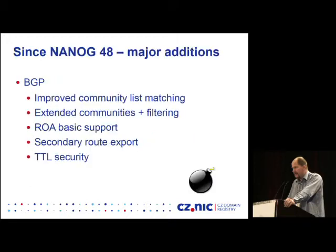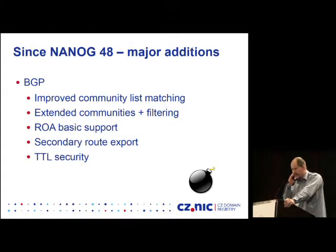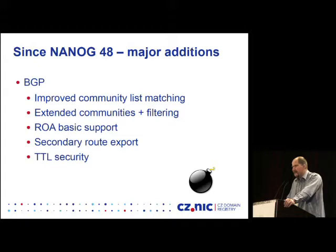Now I will focus on things added since NANOG 48 — just the major additions. A big area we are concentrating on is BGP. Bird is run by many Internet exchange points as a route server, so BGP is crucial for us, especially the filtering side. We improved the community list matching and extended communities. As you know, there are many AS numbers higher than 65,000, which is why we need extended communities to filter those ASes or do community-based signaling. We also added Route Origin Authorization support, which is useful for RPKI.